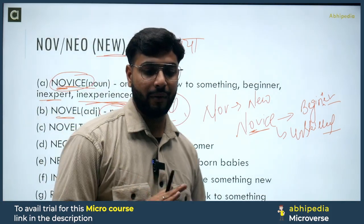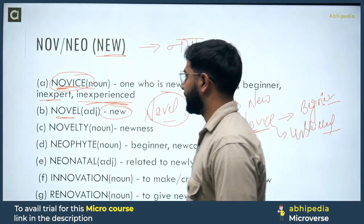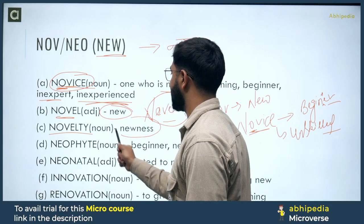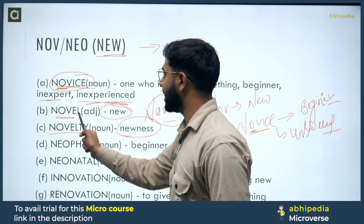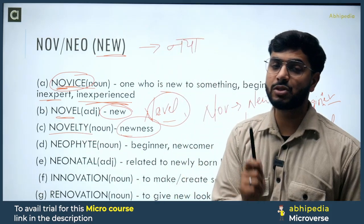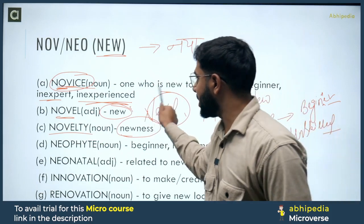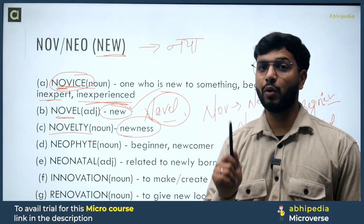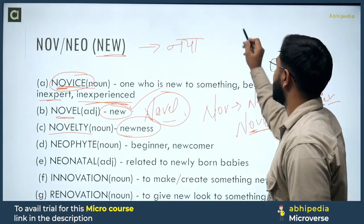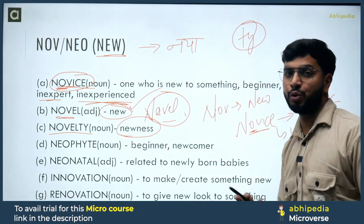Novel — new coronavirus, just for example. Novel as an adjective means new. Then novelty — novelty means newness. Novel is an adjective and novelty is a noun. The suffix '-ty' mostly forms nouns. So novelty means newness.